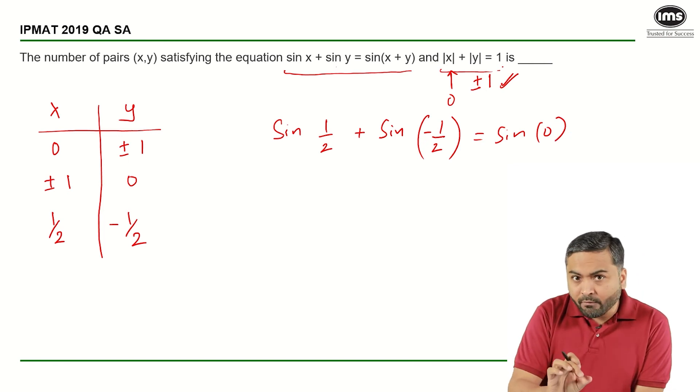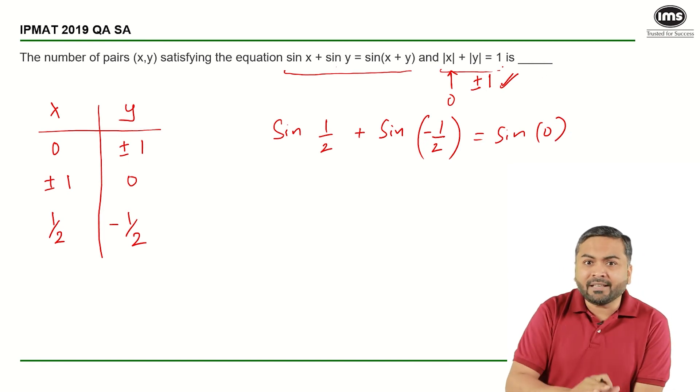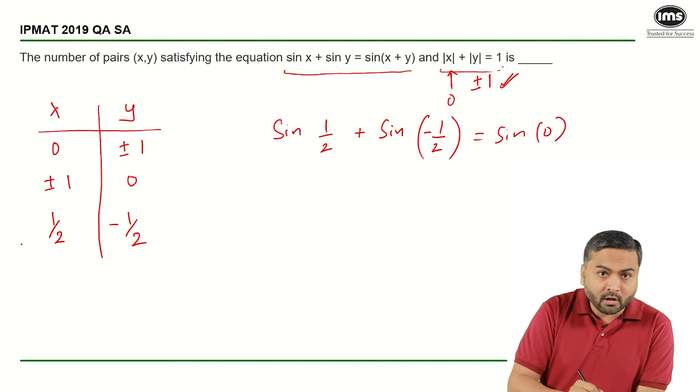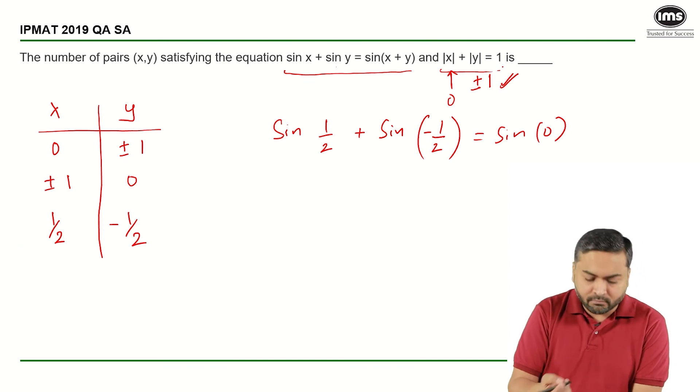Now, if sin of minus x is minus sin x, this gets cancelled out. The left hand side gets cancelled out and sin of 0 is equal to 0. So left hand side is 0, right hand side is also equal to 0. This particular value satisfies and again due to symmetry,